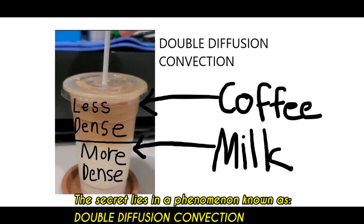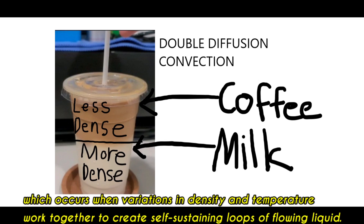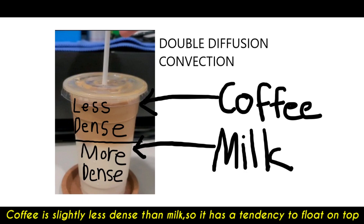The secret lies in a phenomenon known as double diffusion convection, which occurs when variations in density and temperature work together to create self-sustaining loops of flowing liquid. The coffee is slightly less dense than the milk, so it has a tendency to float on top.